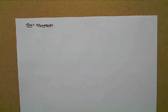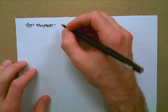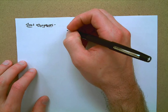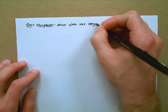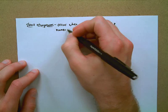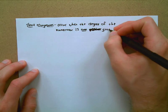Instead of the asymptote being straight up/down or flat left/right, a slant asymptote is diagonal. The way we can tell we have a slant asymptote — does anyone remember? They occur specifically when the degree of the numerator is exactly one greater than the degree of the denominator.